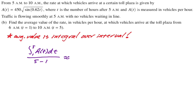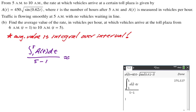This is a calculator question. So we're going to get our answer by storing A(t). I always store functions. Then doing the integral over the interval, I got 375.537, and the units for the average value of a function are the same as the units of the function. So A(t) is measured in vehicles per hour. So the average value of A(t) is also vehicles per hour.